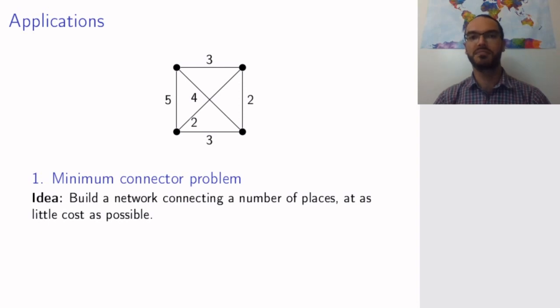The first application of trees that we'll look at is the minimum connector problem. The idea is that you have a number of places, for example cities, and you want to build a network connecting these cities, for example a railway network. We depict the cities as vertices in a graph with weighted edges between them that represent the distance or cost of building a railroad.